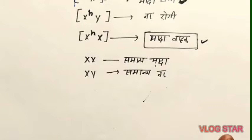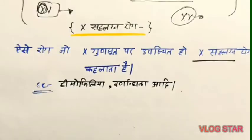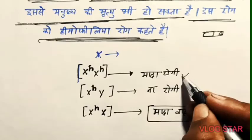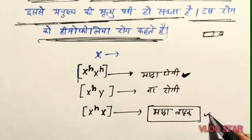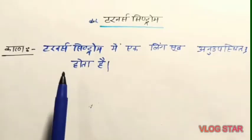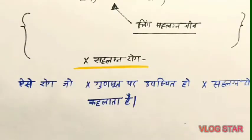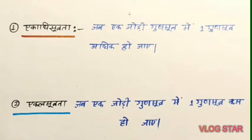For example, color blindness: agar ishtri color blindness se grast hai — if a female is affected by color blindness, the condition may be inherited. In this disease, the patient cannot identify red and green colors. Ek aisi bimari hai jisme marij lal aur hare color ko pehchan nahi pata.